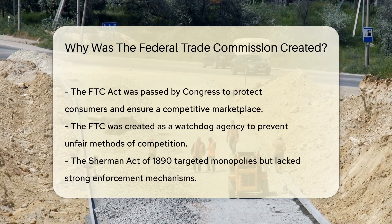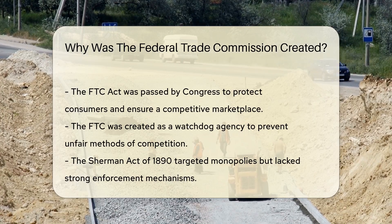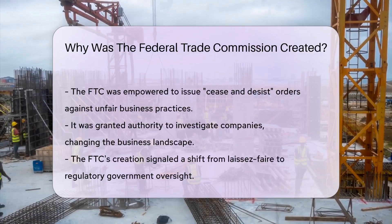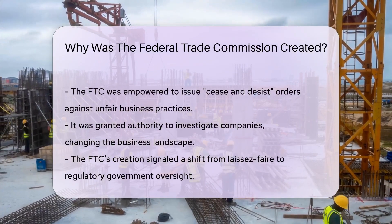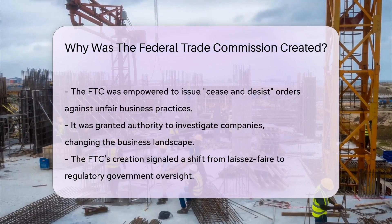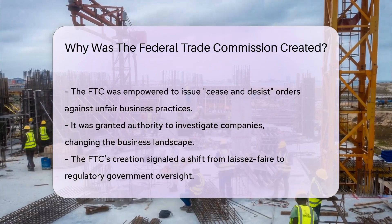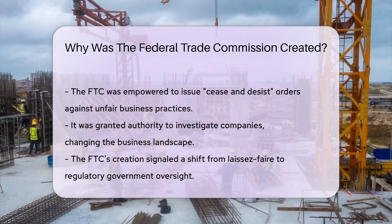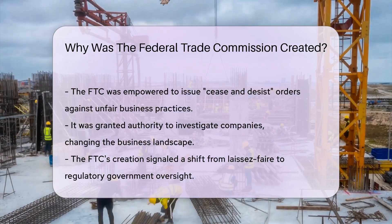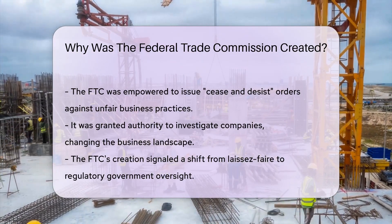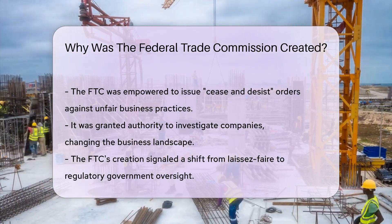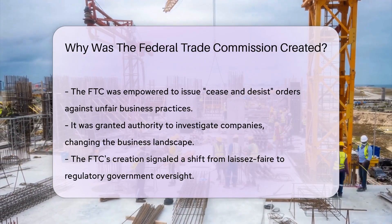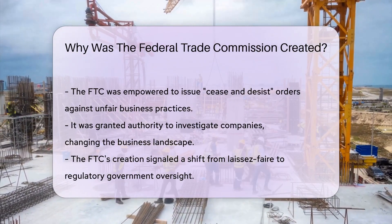The Sherman Act of 1890 had already taken a swing at monopolies, but it needed a partner to enforce its principles. The FTC stepped up to the plate. It was empowered to issue cease and desist orders to stop unfair practices. The FTC also got the authority to investigate companies. This was a game-changer — for the first time, businesses had to play fair or face the federal music.